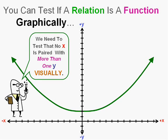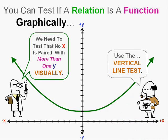We can test visually whether each x has more than one y by using what we call the vertical line test. If we run a vertical line test across the graph and it never touches more than one point at one time.